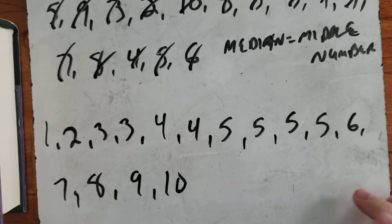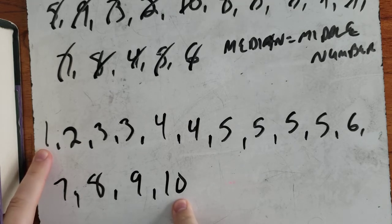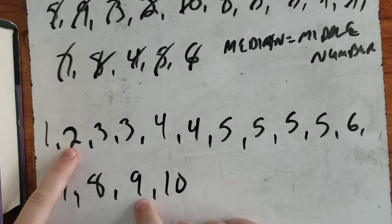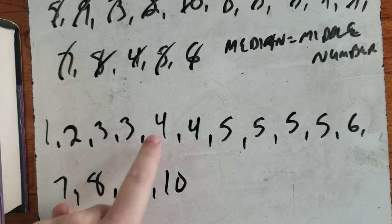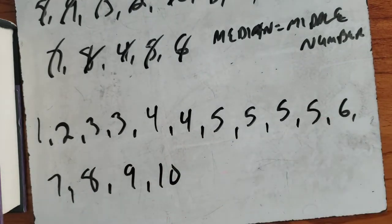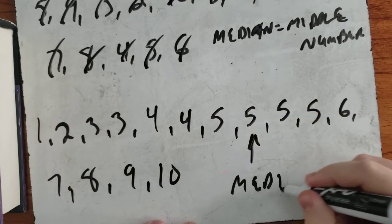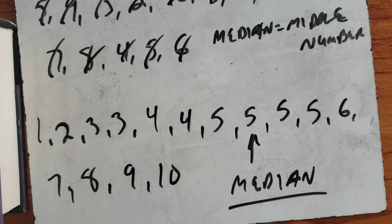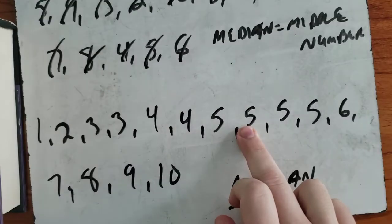It's the middle number. The easy way is to start from your first and last number and go inwards one at a time — 1 and 10, then 2 and 9, then 3 and 8, then 3 and 7, then 4 and 6 — and our middle number is 5. So the median is 5. With 15 numbers, there are 7 on each side and 5 in the middle.